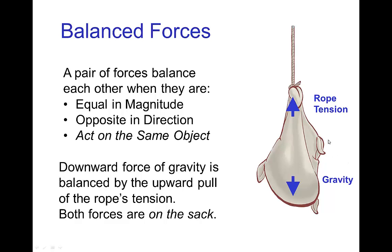Here's an example. We have a sack just hanging here from the rope. We have two forces on the sack. We have the force of gravity pulling the sack down. But we also have the tension in the rope, so the rope is exerting an upward force on the sack. There's no acceleration of the sack, it's just sitting there. So we know that those two forces are in balance. Notice that those two forces are both on the sack, and that's essential for having balanced forces.